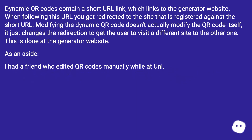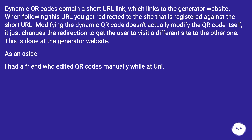Dynamic QR codes contain a short URL link which links to the generator website. When following this URL you get redirected to the site that is registered against the short URL. Modifying the dynamic QR code doesn't actually modify the QR code itself — it just changes the redirection to get the user to visit a different site. This is done at the generator website.